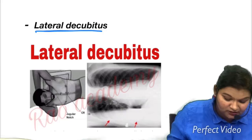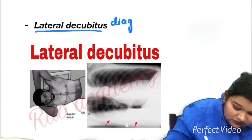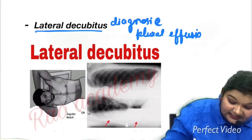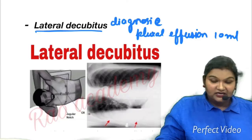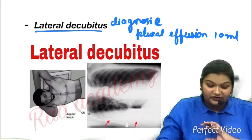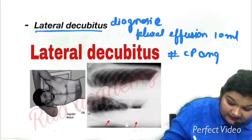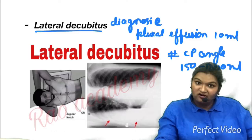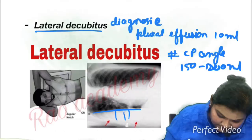The advantage of the lateral decubitus view is that it is used in the diagnosis of fluid in the pleural cavity — pleural effusion. It can detect as little as 10 ml of fluid in the pleural cavity. When the patient is sitting erect, diagnosing pleural effusion requires blunting or obstruction of the costophrenic angle, and the fluid must be as high as 150 to 200 ml. With lateral decubitus, you can appreciate whitening in this part, which is our fluid.